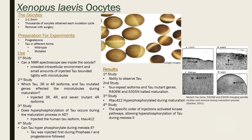The third study had a hypothesis that hyperphosphorylation of tau occurs during the maturation process in Alzheimer's disease. They injected a human tau isoform in different concentrations and witnessed overaccumulation during maturation. The last study tested other possibilities of hyperphosphorylation beyond the mitosis phase. When tau protein was injected during prophase I and then progesterone — the opposite of previous studies — they noticed tau hyperphosphorylating during meiosis II.